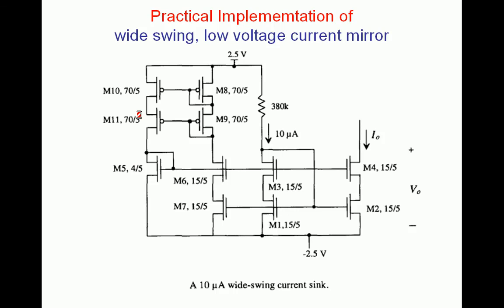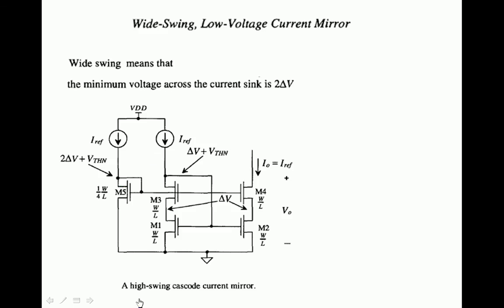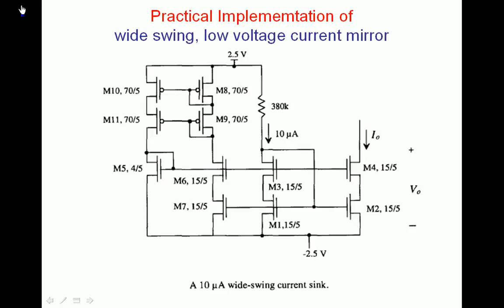Practical implementation of wide swing low voltage current mirror: what is meant by practical implementation? Look at the diagram of the high swing cascode current mirror. For this circuit, we are giving I reference in two places — both are symbols of I reference, and here we should provide a reference current. This reference current should be supplied practically. Whenever the symbol is replaced with actual circuits, that is treated as the practical implementation.